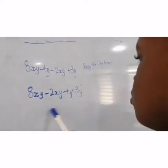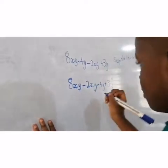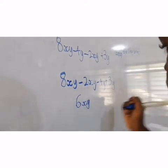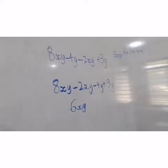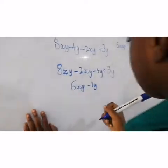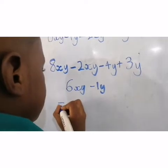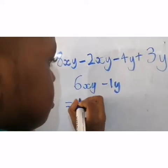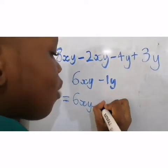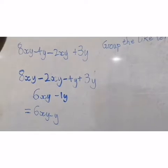So, 8XY minus 2XY will be equal to 6XY. Negative 4Y plus 3Y will be equal to negative 1Y. Another way to write it is 6XY minus Y. This is how you simplify algebra.